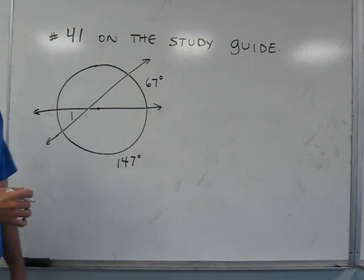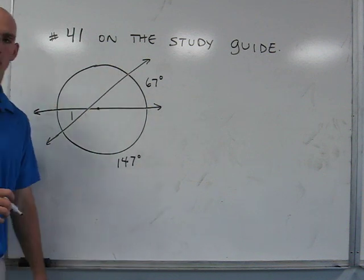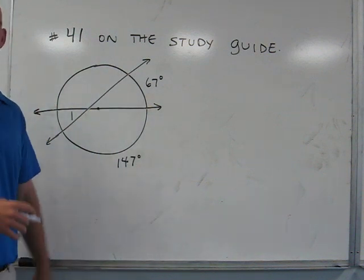What that gives us is the ability to find the measures of these other arcs that are not marked. Without these two pieces of information, you would not be able to solve this problem.